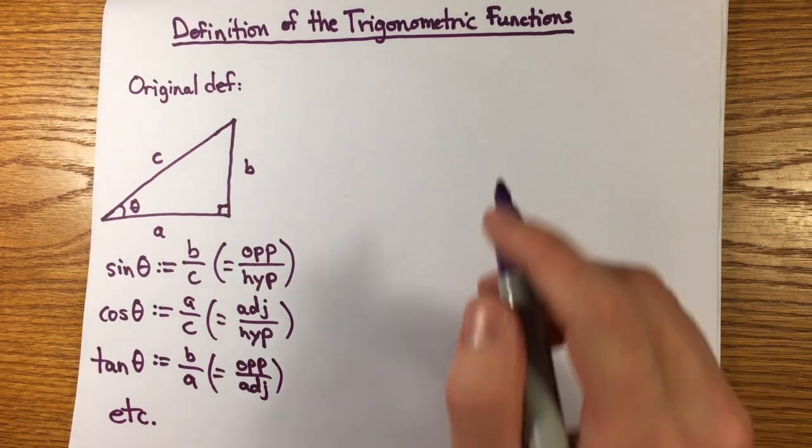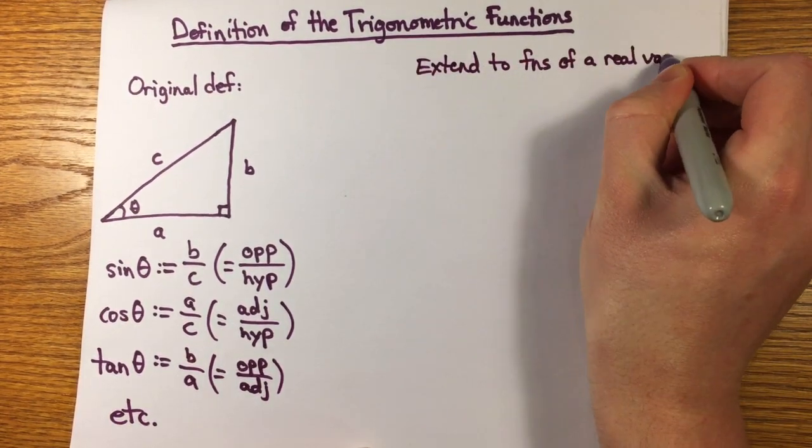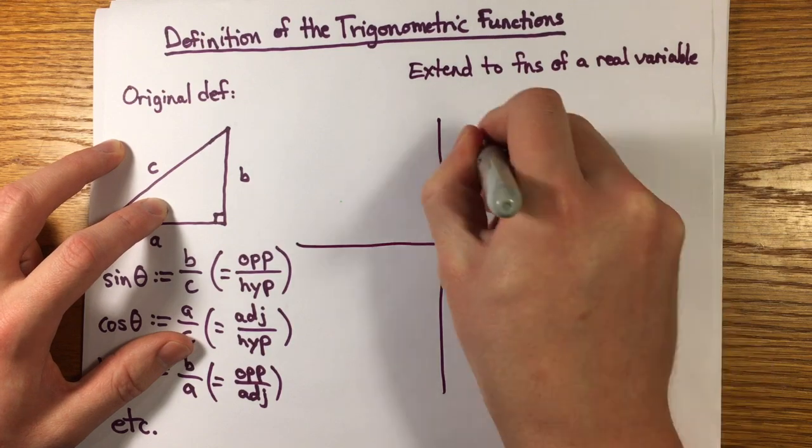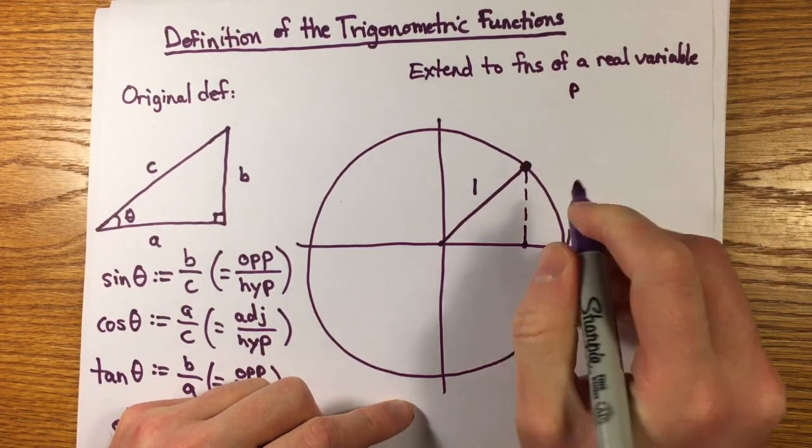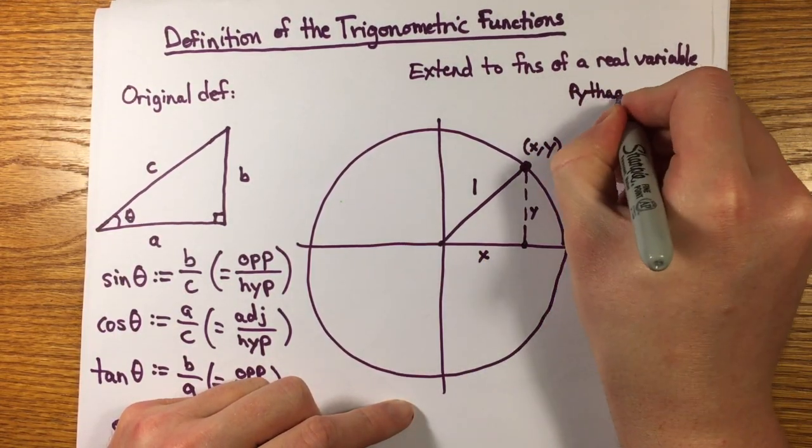The set of points in the xy plane that are distance 1 from the origin is called the unit circle and may be given as a set of points that satisfy the equation x squared plus y squared equals 1. That's by the Pythagorean theorem.